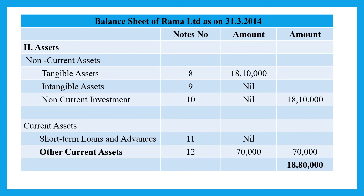On the asset side, we have non-current assets and current assets. There are three sub-titles: tangible assets, intangible assets, and other non-current investments. Tangible assets total ₹18,00,000. Current assets — short-term loans and advances, and other current assets — total ₹70,000. So the grand total on the asset side is ₹18,80,000. Therefore, both assets and liabilities have been balanced.